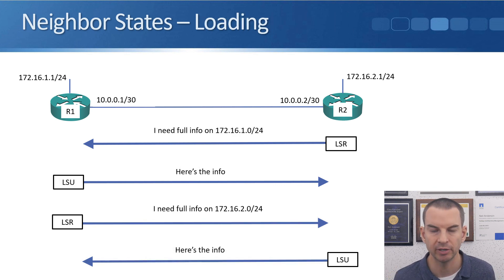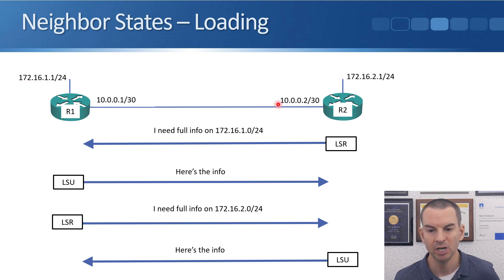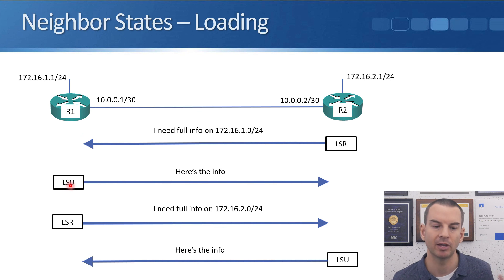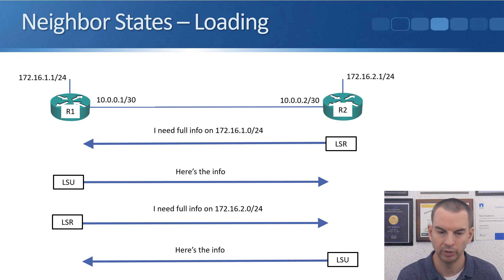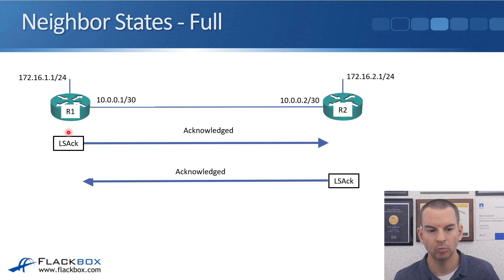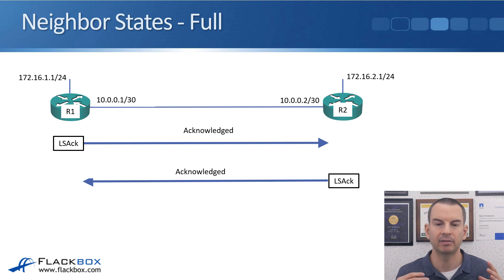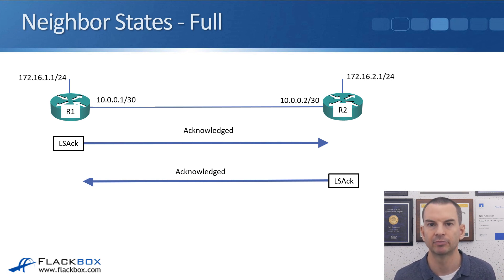They then move into the loading state. R2 saw in R1's summary that R1 knows about 172.16.1.0/24, which R2 doesn't have, so it sends a link state request (LSR) asking for full information about that network. R1 replies with a link state update (LSU) containing the full details. Similarly, R1 sends an LSR to R2 for 172.16.2.0/24, and R2 replies with an LSU. Both routers then send acknowledgements confirming receipt of the updates.